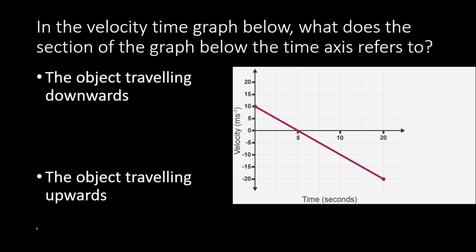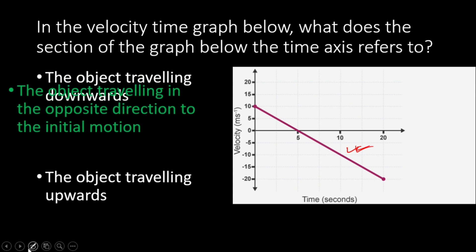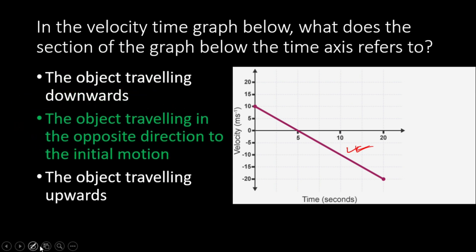Next question: in the velocity-time graph, what does the section of the graph below the time axis refer to? It means the object is traveling in the opposite direction to the initial motion.